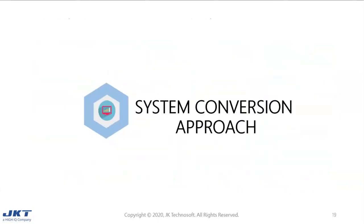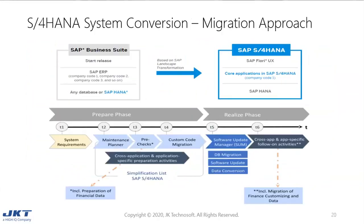Let's move on to the system conversion approach for migrating to SAP S4HANA. Here we see the overview of the conversion process, with the prepare and realize phases mapped against time. In T1, we check for system requirements — one important prerequisite is that the system needs to be a Unicode system, and dual-stack systems are not supported. In T2, we run the maintenance planner tool, provided by SAP, which checks the system's existing components, add-ons, and business functions to ensure compatibility with S4HANA, and creates a stack file used for the actual conversion process by the SUM tool.